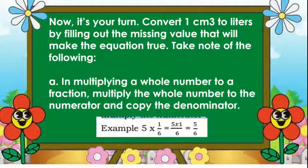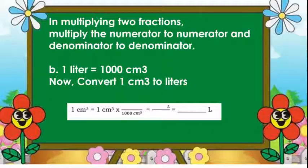Learning from our previous examples, now it's your turn. Convert 1 cubic meter to liters by filling out the missing value that will make the equation true. Take note of the following. In multiplying a whole number to a fraction, multiply the whole number to the numerator and copy the denominator. Like in our given example, the whole number is 5 multiplied by 1 over 6. We are going to multiply 5 by 1 equals 5 and then copy the denominator, which is 6. While in multiplying two fractions, multiply the numerator to numerator and denominator to denominator.